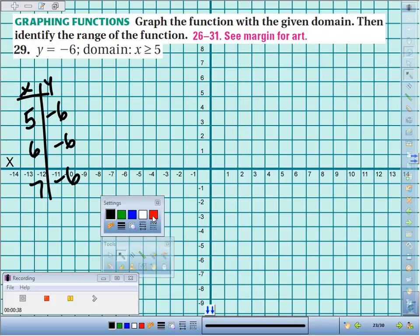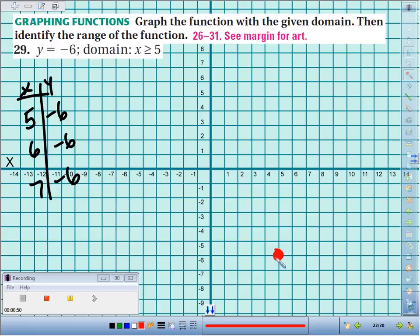If you start plotting those points, I like to make a big dot at the end point. Again, that's when x is 5. And when x is 5, the y value is negative 6. So 5 negative 6, that's kind of my stop sign. My line is going to have to stop at that point.